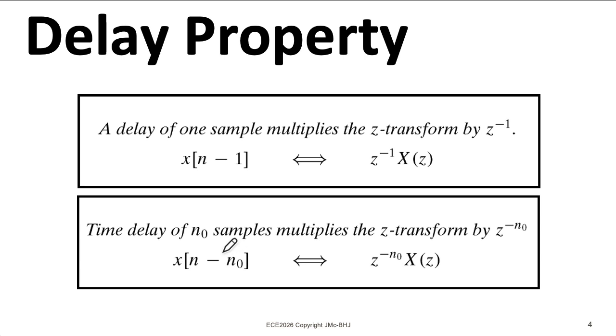And this property generalizes. If you want to delay a signal by 37, then in the Z-transform domain, you multiply it by Z to the power of minus 37.